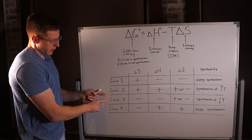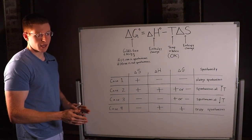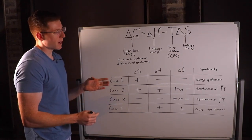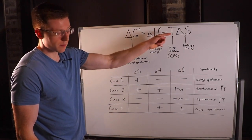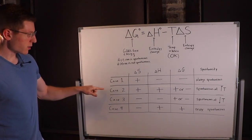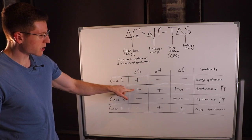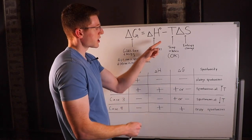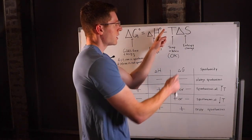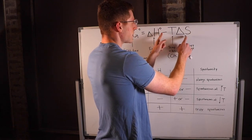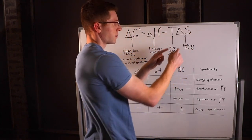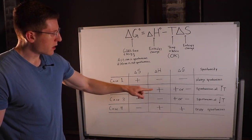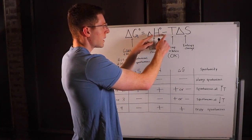Cases 2 and 3 are slightly tricky because they are actually temperature dependent — the spontaneity of the reaction depends on the value of the temperature. In Case 2, we have a positive delta S, so the T·delta S term is positive, meaning we subtract a positive term. We also have a positive delta H.